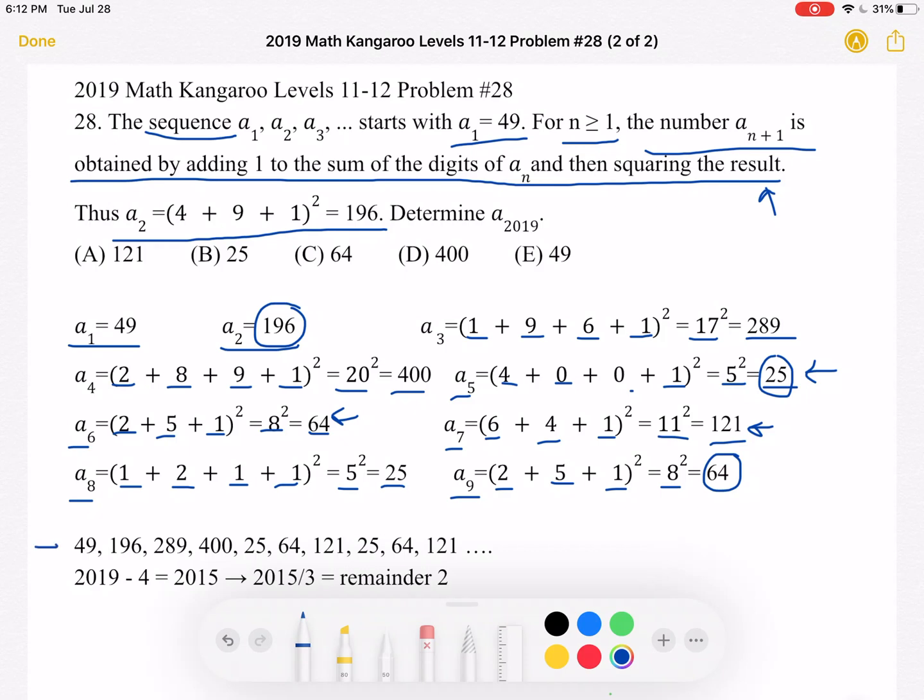So to summarize, let's write down the numbers of the sequence we've determined so far. We got 49, 196, 289, 400, and then we got 25, 64, 121, 25, 64, 121. As you can see, this block of three numbers is going to continue on forever.